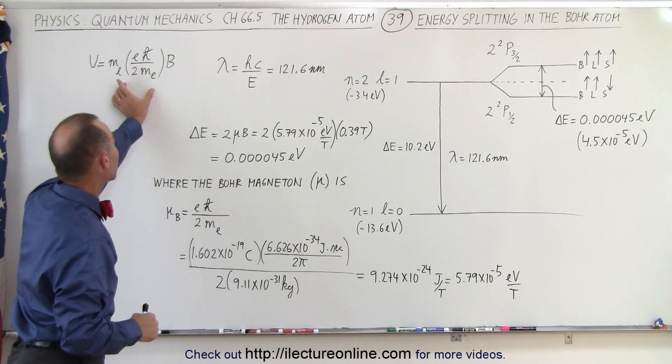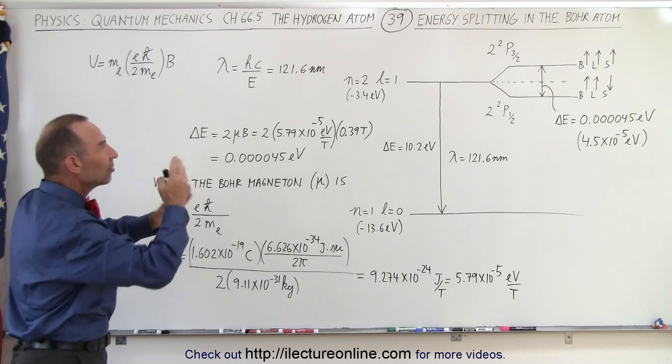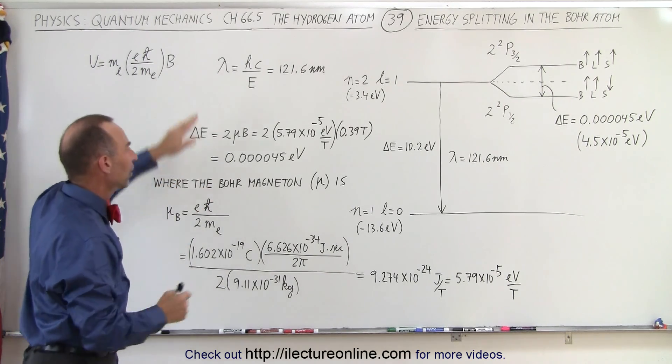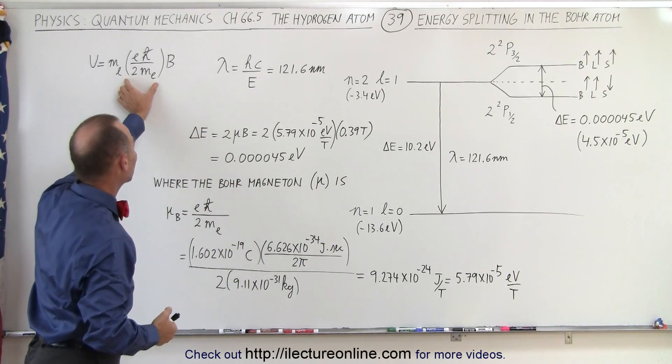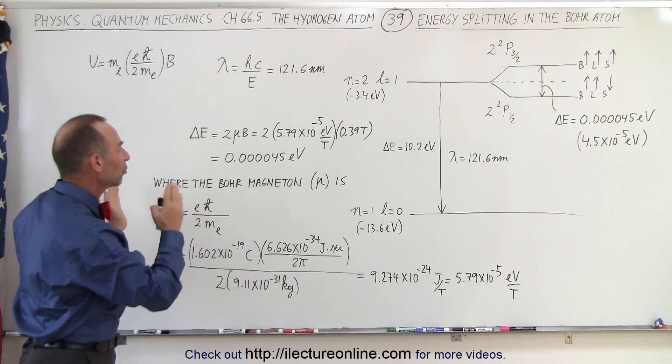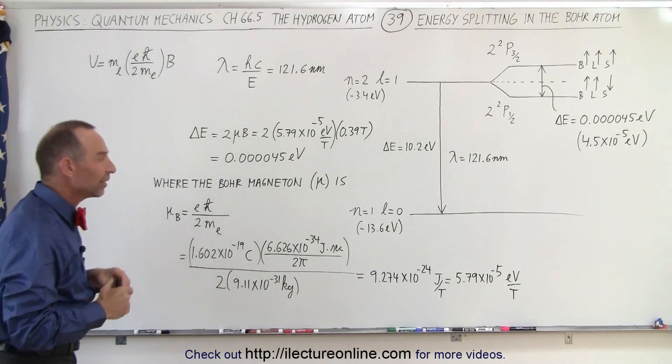Now this quantity here fits in the equation that calculates the energy caused by this interaction between the b field, caused by the orbital motion of the electron, and then this quantity here, which then is what we call the interaction between the spin and that magnetic field, which then produces the change of the energy.